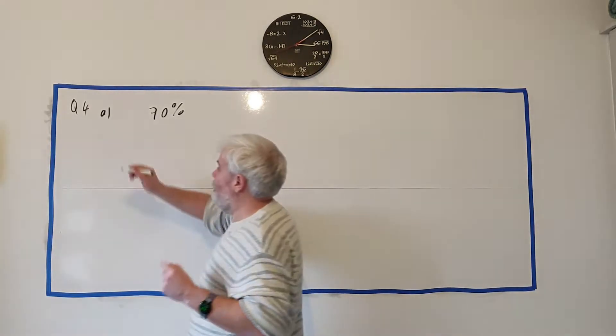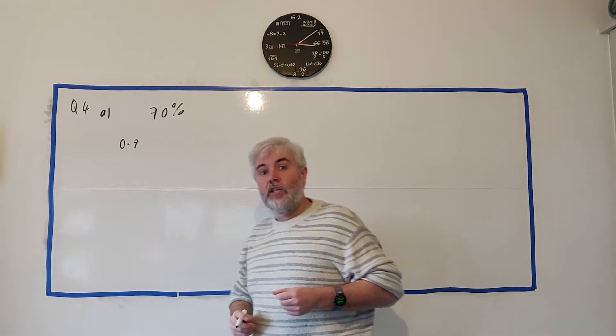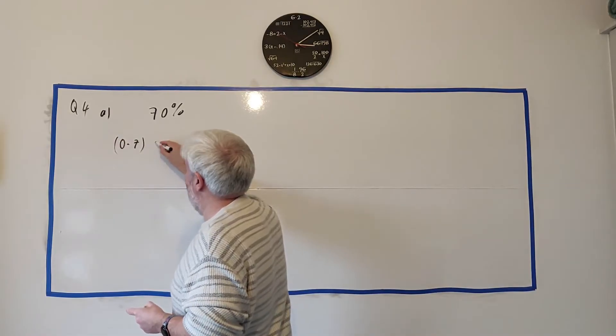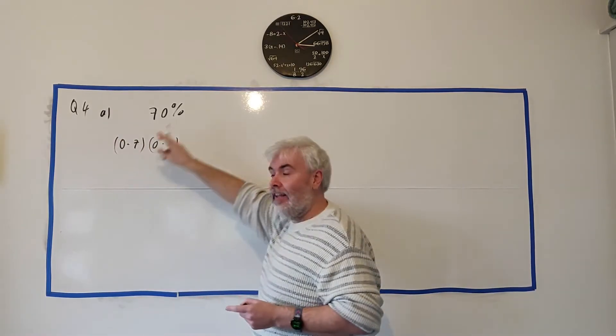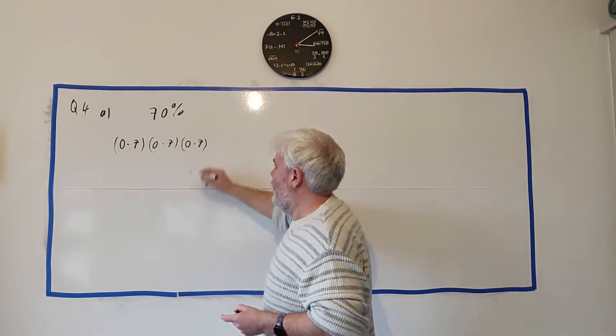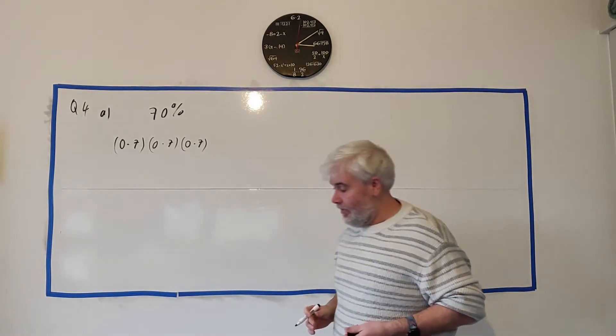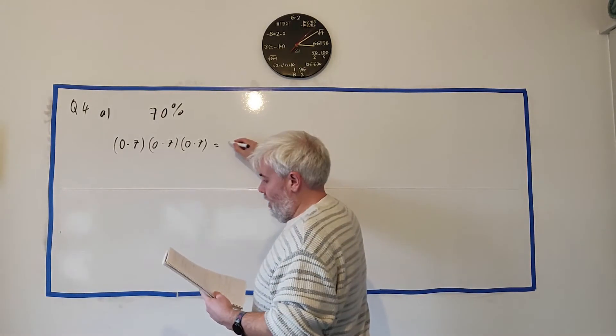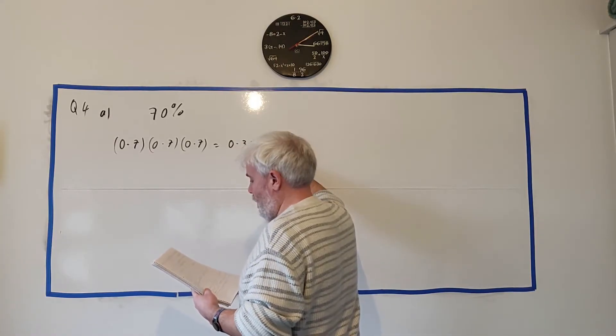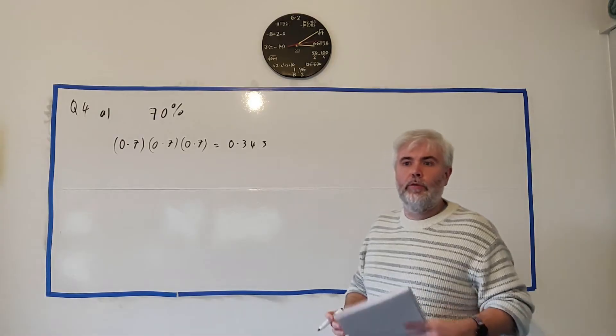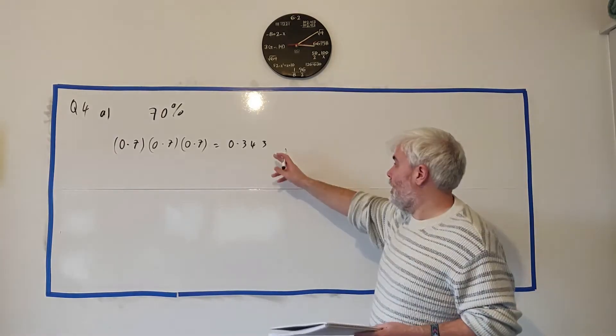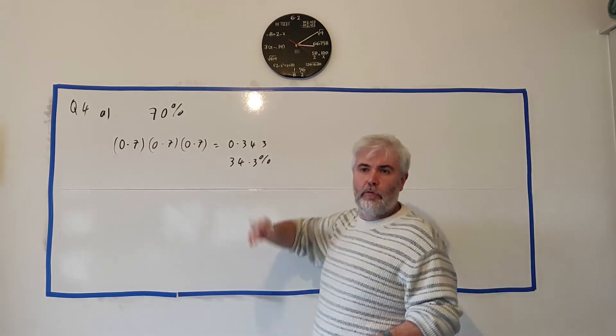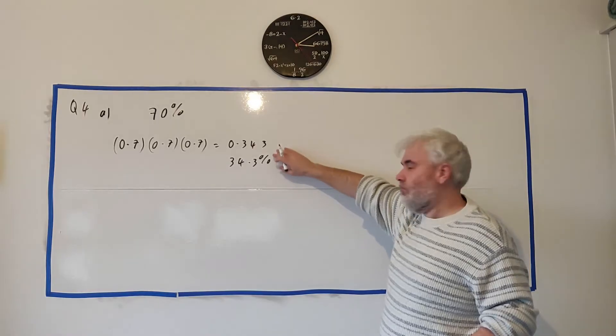So all three of them that he scores. The probability of him getting the first one is 0.7. The probability of him getting the first one and the second one is this multiplied by 0.7 again and the next one 0.7. So to get all three of them we have to multiply 0.7 by 0.7 or 0.7 cubed and the answer there is 0.343, and that would be the answer or if you want to write that in percentages at 34.3%.